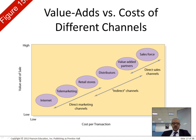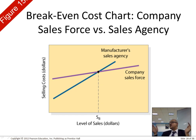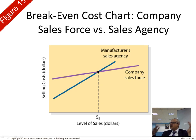This shows value added versus cost differentiation. Internet has low value added but also low cost per transaction. Telemarketers are more expensive; retail stores and distributors add more value; and a dedicated sales force — people you hire to sell your products — is at the highest end. There's also break-even analysis: the number of sales you need in order to cover costs. This is the number-one business question in any business plan. Below the break-even, you're losing; above it, you're making money.